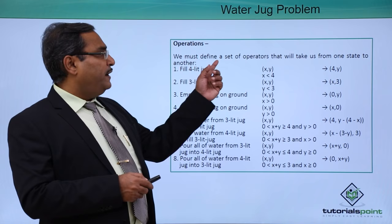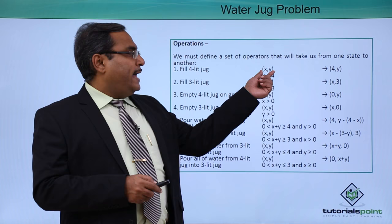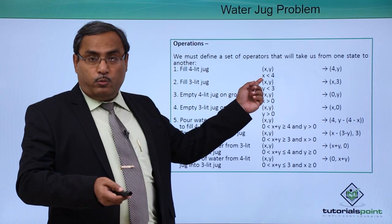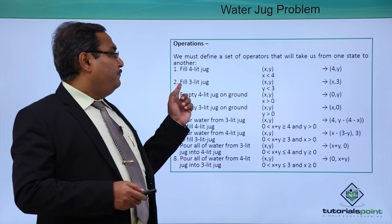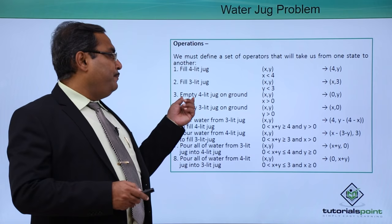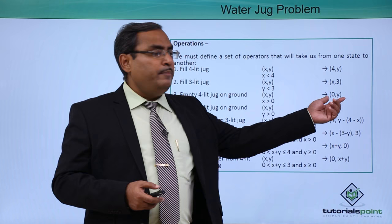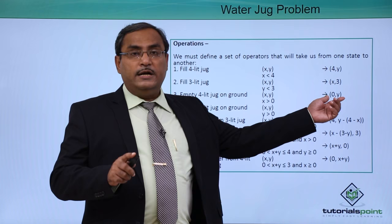We must define a set of operators that will take us from one state to another. The first operator is Fill 4-litre jug: if x is less than 4, you can pour water into the 4-litre jug and the resulting state will be (4, y). The second is Fill 3-litre jug: if y is less than 3, you can pour water into the 3-litre jug and the resulting state will be (x, 3). Empty 4-litre jug on ground: if x is greater than 0, pour water on the ground and the state becomes (0, y).